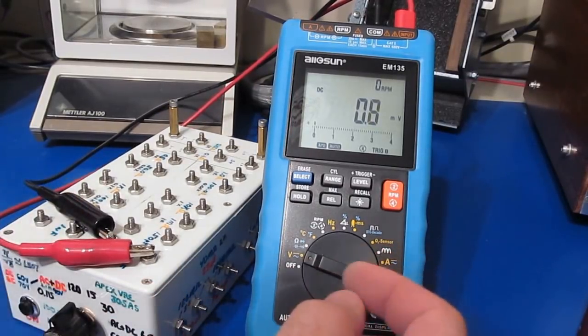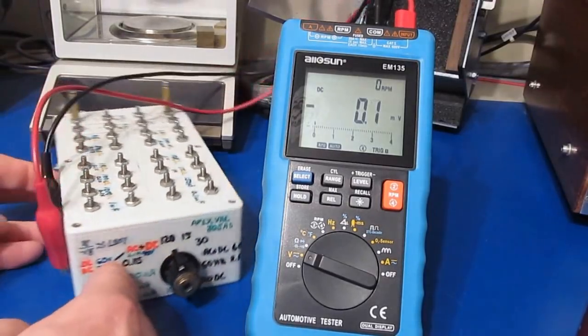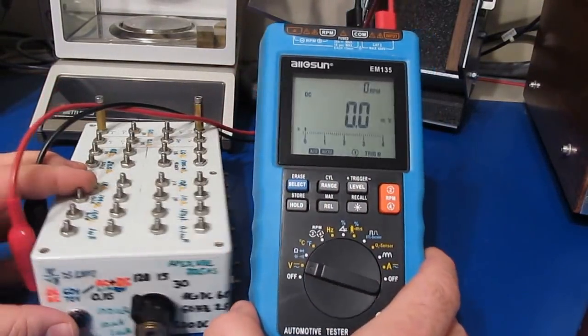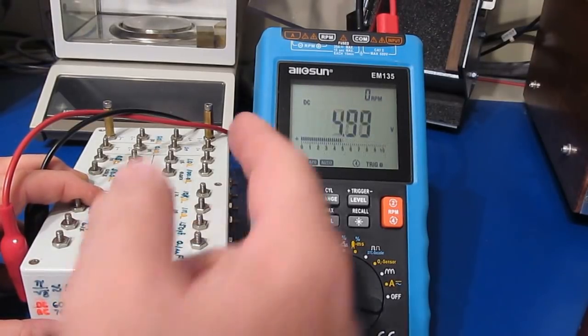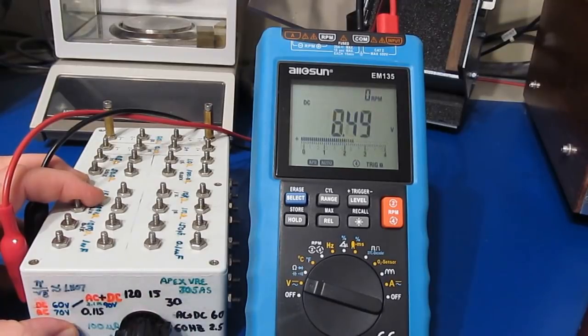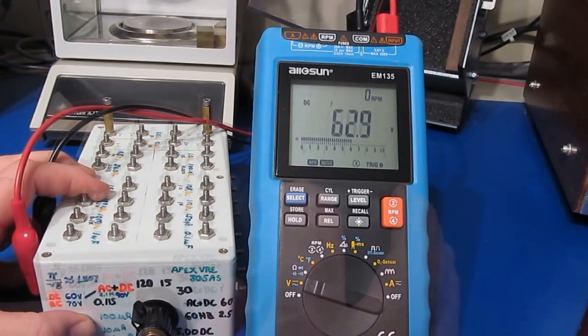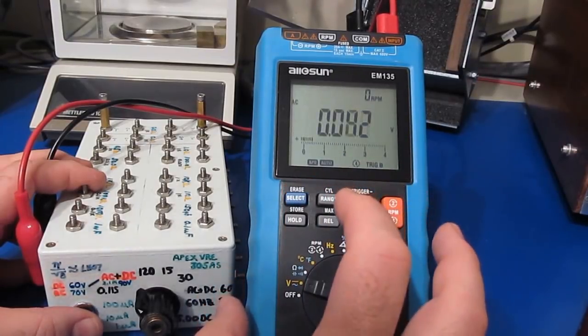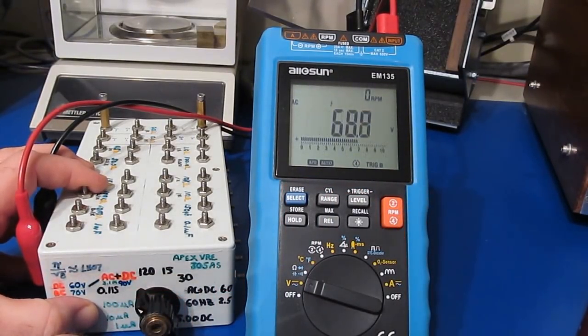Basic functional testing begins with voltage input in DC mode, reading 4.99V for the 5-volt input, approximately 2.5 volts, and roughly 60 volts. Switching to AC mode shows approximately 70 volts and 2.5 volts, though this is an averaging meter.